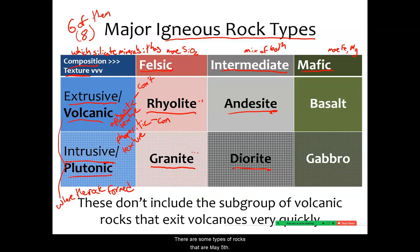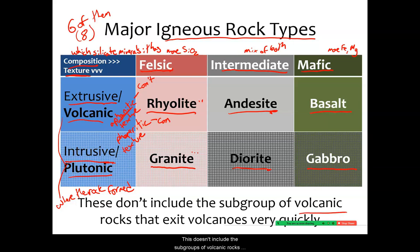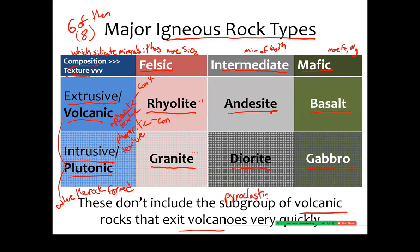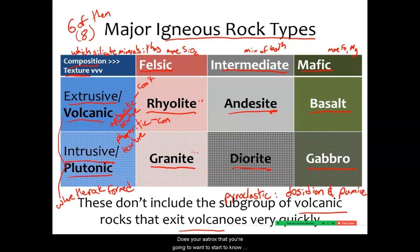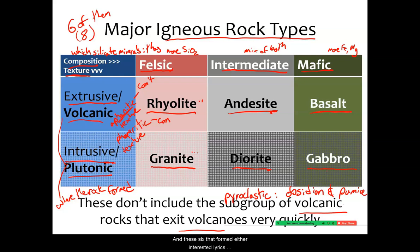Mafic igneous rocks either formed on Earth's surface and are called basalt, or formed deep underground and are called gabbro. This doesn't include pyroclastic rocks — subgroups of volcanic rocks that exit volcanoes extremely quickly. The other two names you'll want to know are obsidian and pumice. So your eight rocks to know are: rhyolite, andesite, basalt, granite, diorite, gabbro, obsidian, and pumice. These six that formed either intrusively or extrusively break down well into the table by composition and texture.